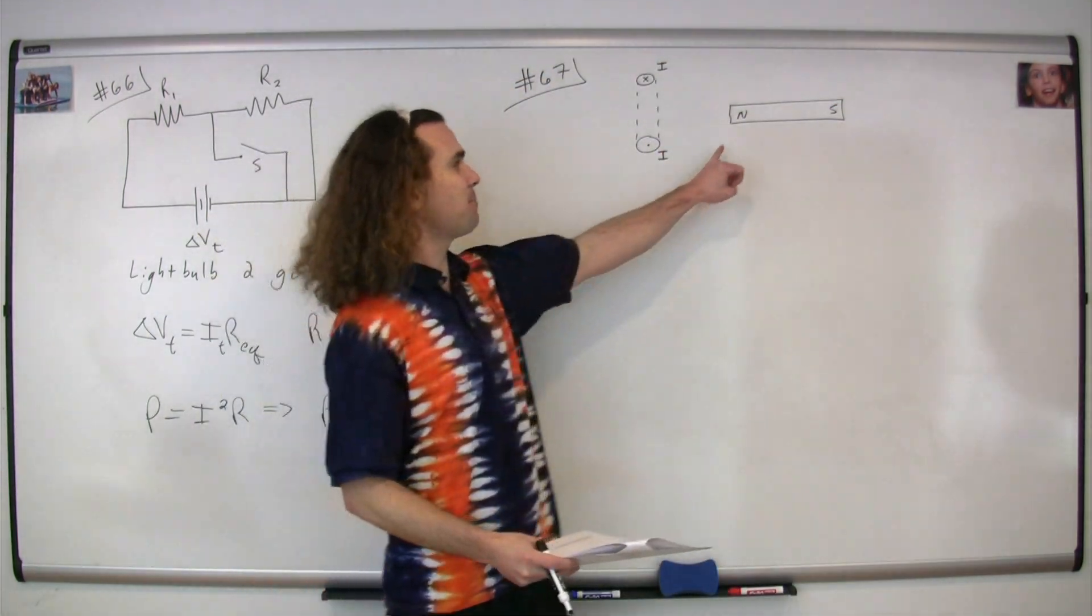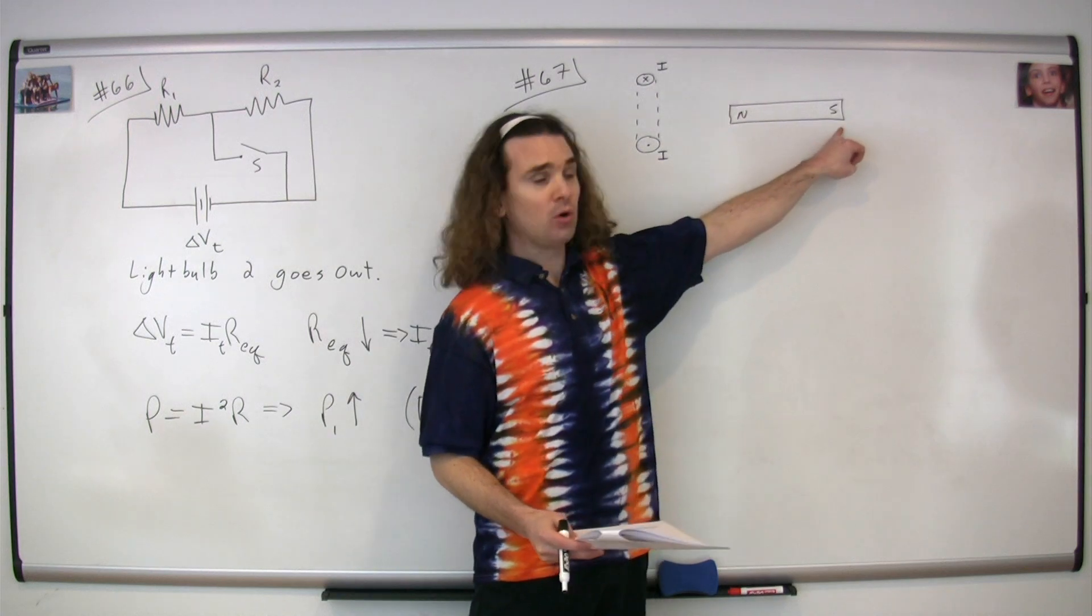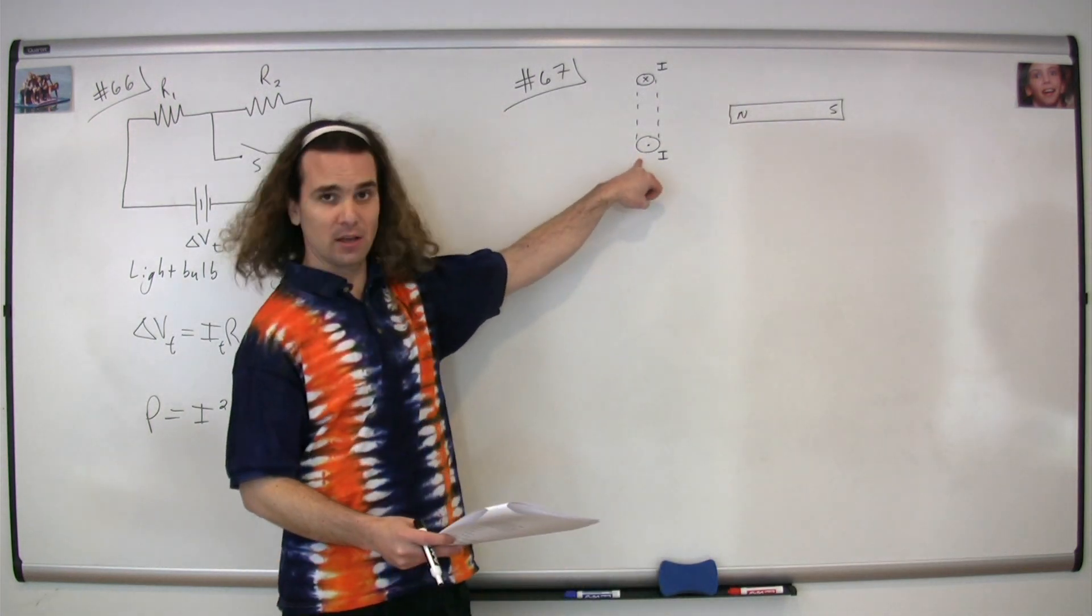Question number 67, we have a bar magnet with a north and south pole close to a current-carrying loop.